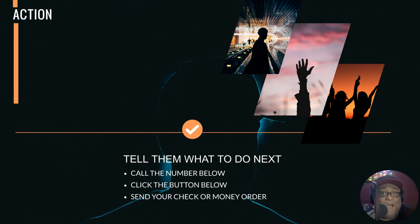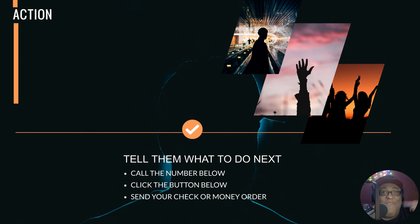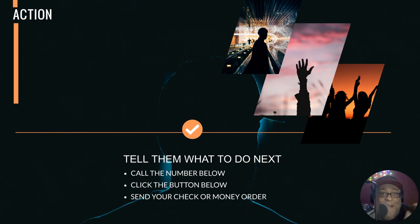Now we've gotten their attention, their interest, gotten them wanting the product — the next step is they've got to buy it. This is the last but most important step: Action. We want you to take action right now. This is the whole key to direct response marketing. Brand awareness ads, like Coca-Cola, never say 'go buy a Coke right now' — they just say 'love Coca-Cola' and try to program you over 25-50 years. We as direct response marketers want you to take action right now and buy our product today. You do that by telling them what to do next: call the number below, click the button below, send your cash or check to this address.